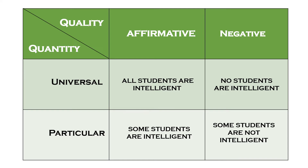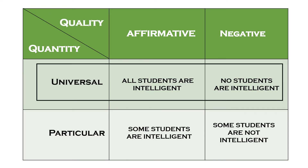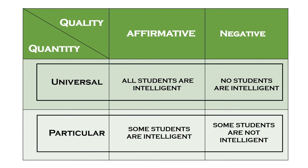You first have to identify the form of the statement by looking at its quantity and quality. In terms of quantity, a statement is said to be universal if it talks about all the items in a category and uses words such as 'all' or 'every.' A statement is said to be particular if it talks about only some of the items in a particular category and uses words such as 'some' or 'some not.'